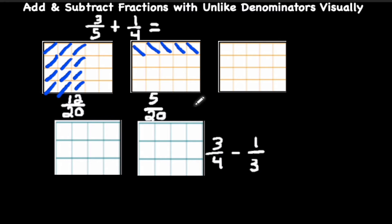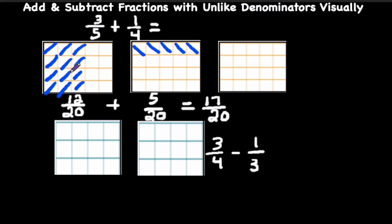Notice our denominators are the same, so we keep the denominator of 20 and simply add across the numerators: 12 plus 5 is 17. Now here we have a third area model where we bring these together. We bring the 3, 6, 9, 12 shaded sections over, and then we bring the 1, 2, 3, 4, 5 shaded sections over as well.